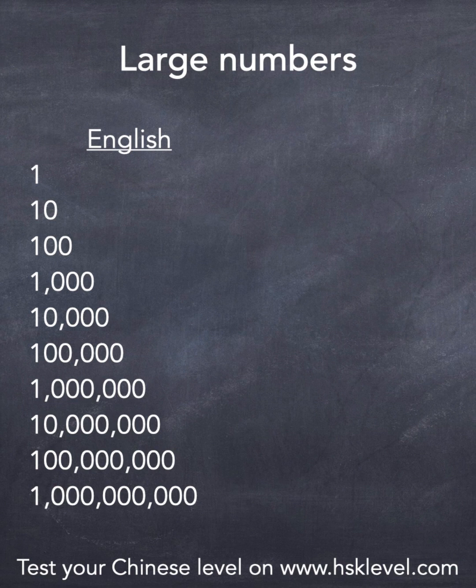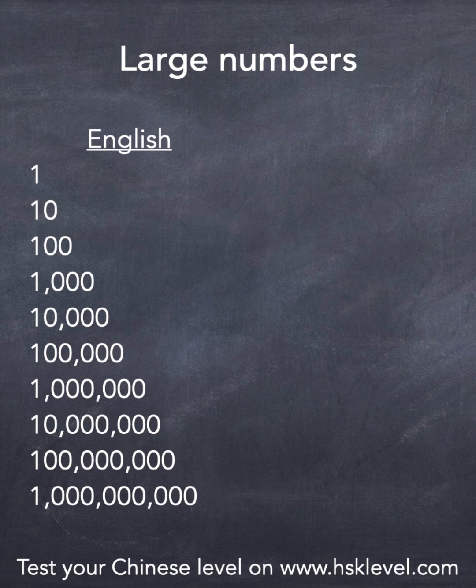So when expressing large numbers in English, because we group the digits by groups of three, we have a word for one, ten, one hundred, one thousand, but there is no special word for ten thousand — we just say ten thousand, then one hundred thousand. Then we get to one thousand thousands, but we don't say that; we have a new word which is million. Then ten million, one hundred million, and then we can't say one thousand million, so we use the new word billion. Then ten billion, one hundred billion, and then a new word which is trillion.